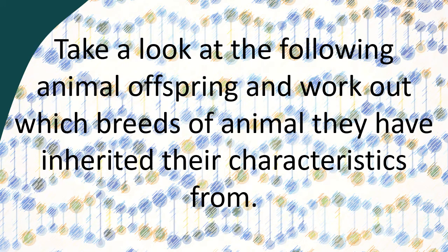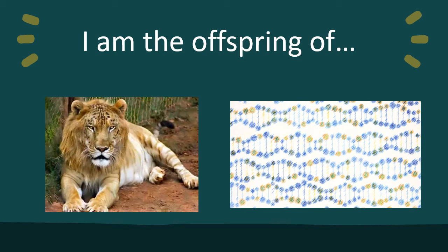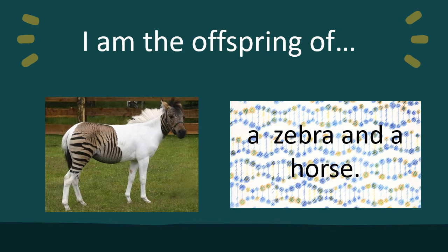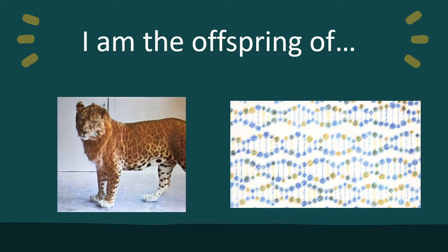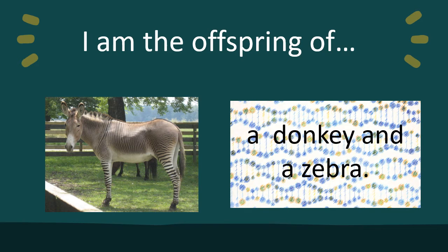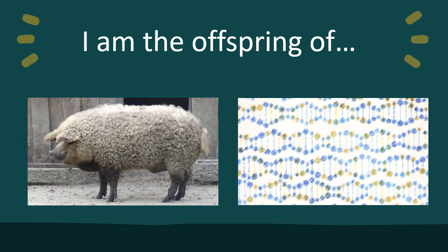Take a look at the following animal offspring — this is a little bit of fun. Work out which breeds of animal they have inherited their characteristics from. You're going to see an animal and think: who are the parents? What breeds have been bred together to make this offspring? The answers: a lion and a tiger; a zebra and a horse; a lion and a leopard; a donkey and a zebra; and a sheep and a pig.